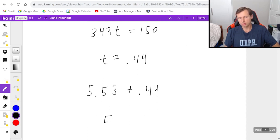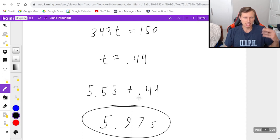So then the final answer is I just need to add these two times together 5.53 plus 0.44. We'll get a final answer of 5.97 seconds. And there's our answer.